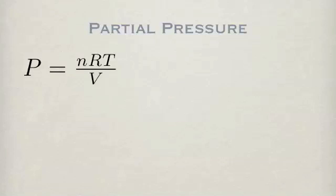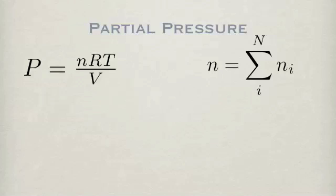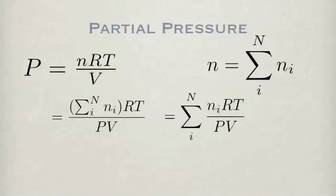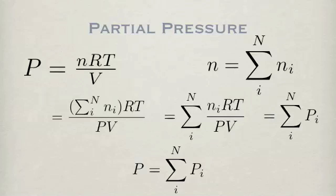The definition of partial pressure can be derived from the ideal gas law. Within the ideal gas law relationship, substitute n with a summation. From this summation, bring out the partial pressure expression for the n-th species. The concept of partial pressure is useful to establish the composition of a gas mixture. It is directly proportional to the number of moles of a substance.